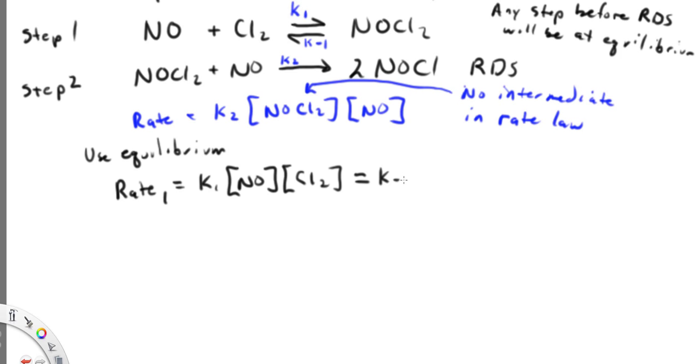But this is going to also equal the rate of the reverse reaction going the opposite direction. So that's going to equal K minus 1. It's not that these two constants are equal, but the rates of forward and reverse are equal. So K times NOCl2, K minus 1 is equal to K1 times NO times Cl2. Now we can solve for NOCl2 and substitute.